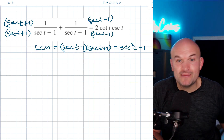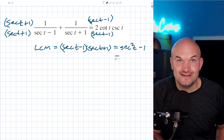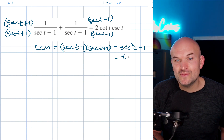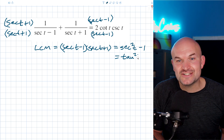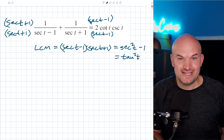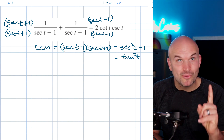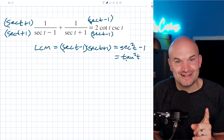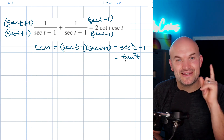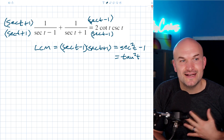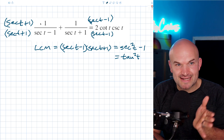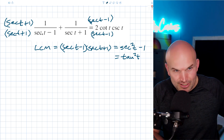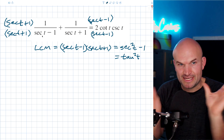Now, if you know your Pythagorean identities, you'll know that secant squared of t minus one is going to give you tangent squared of t. That's very important — if you don't know it, make sure you go look it up because I'm not going to go back through it on this video. Make sure you know your Pythagorean identities. Now on the right-hand side, we know our common denominator is now tangent squared of t.